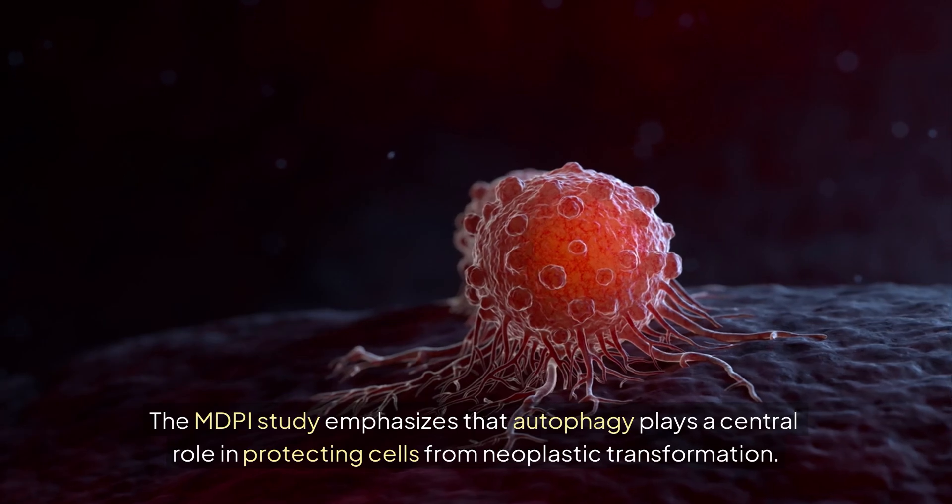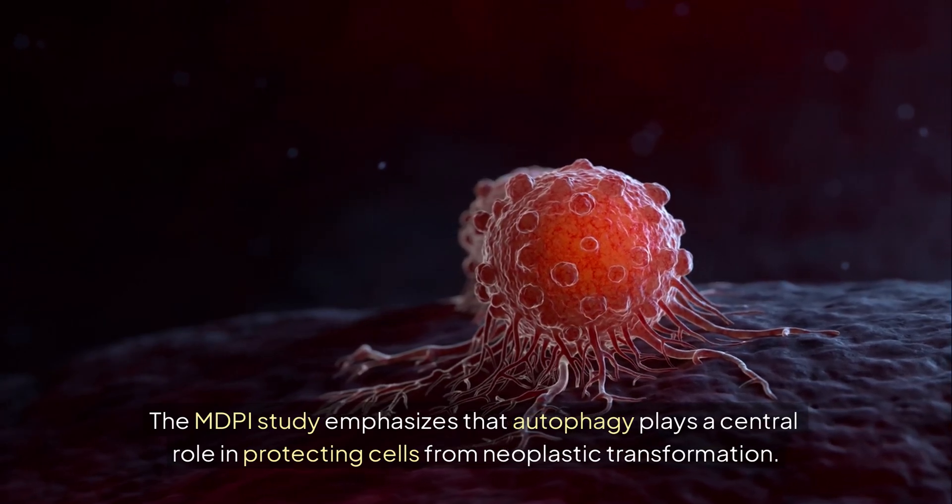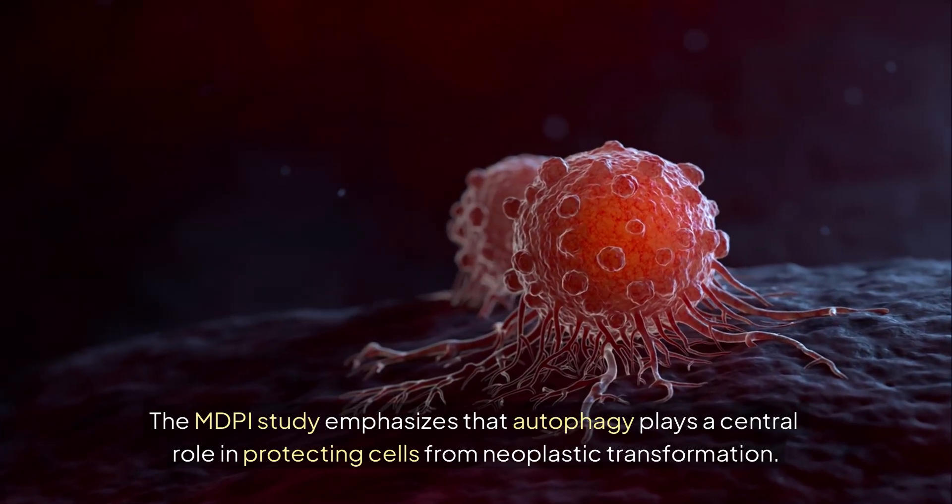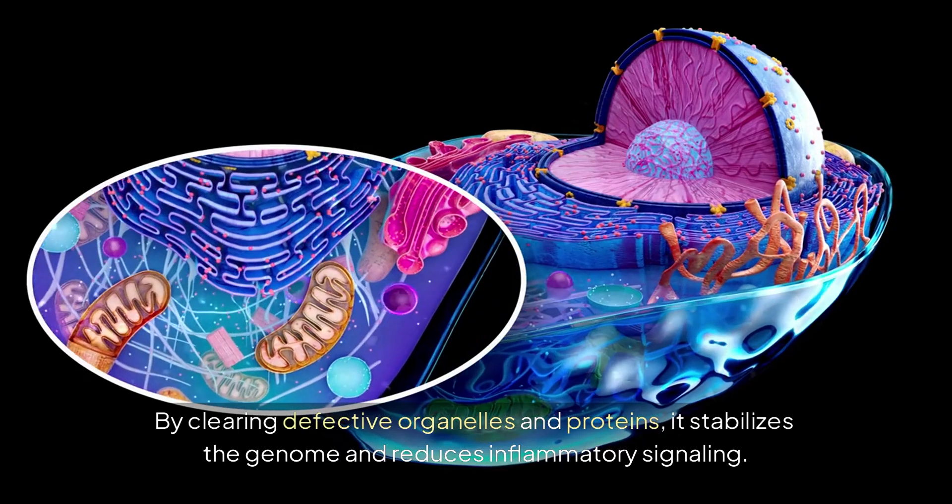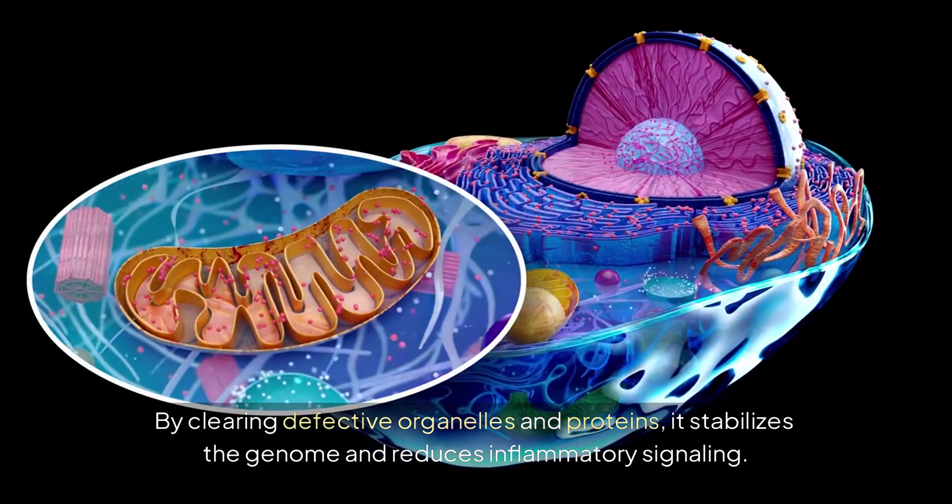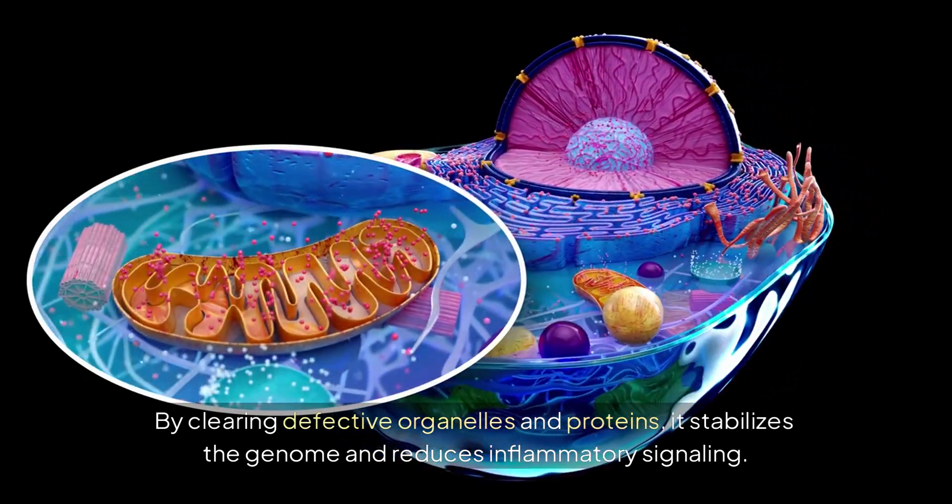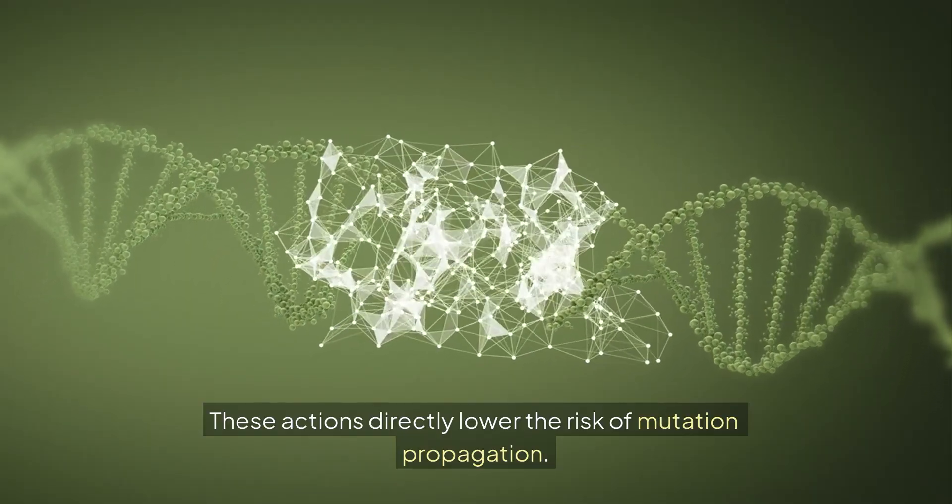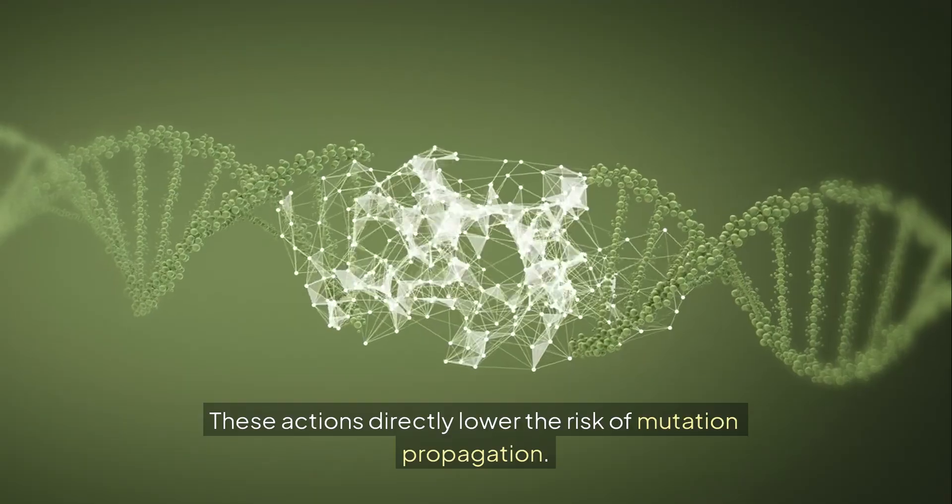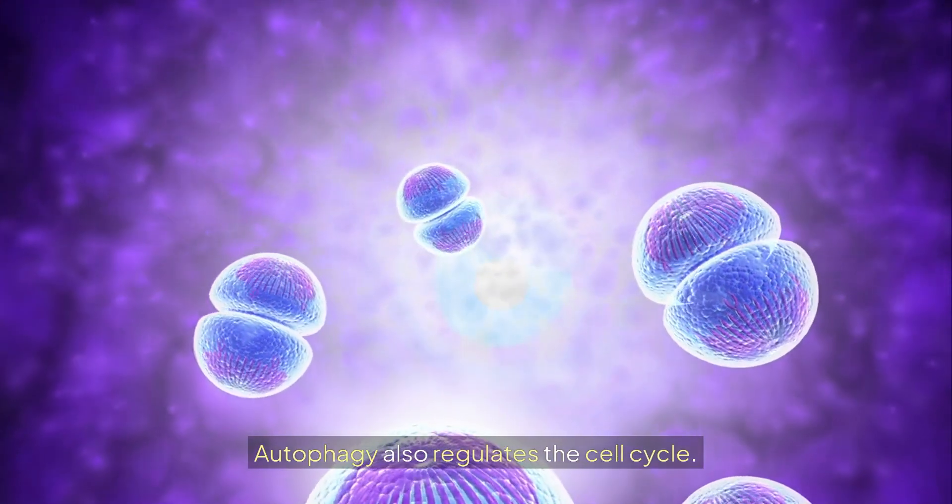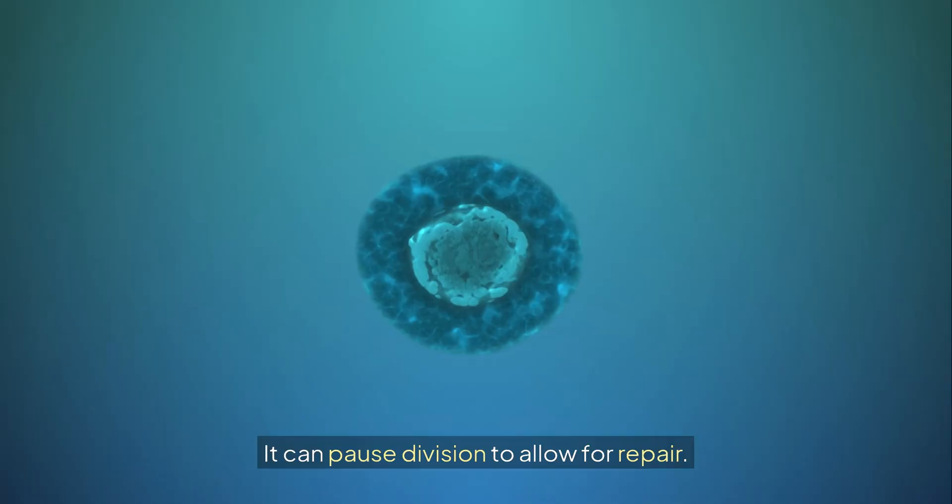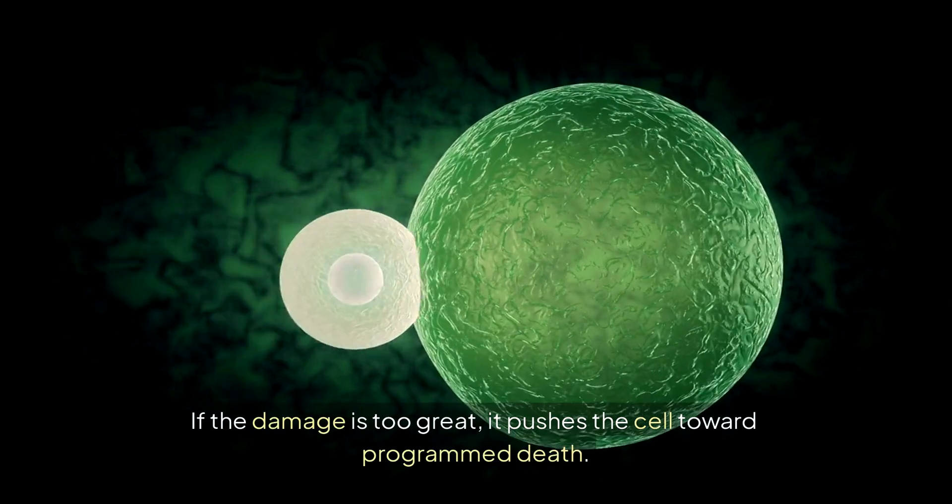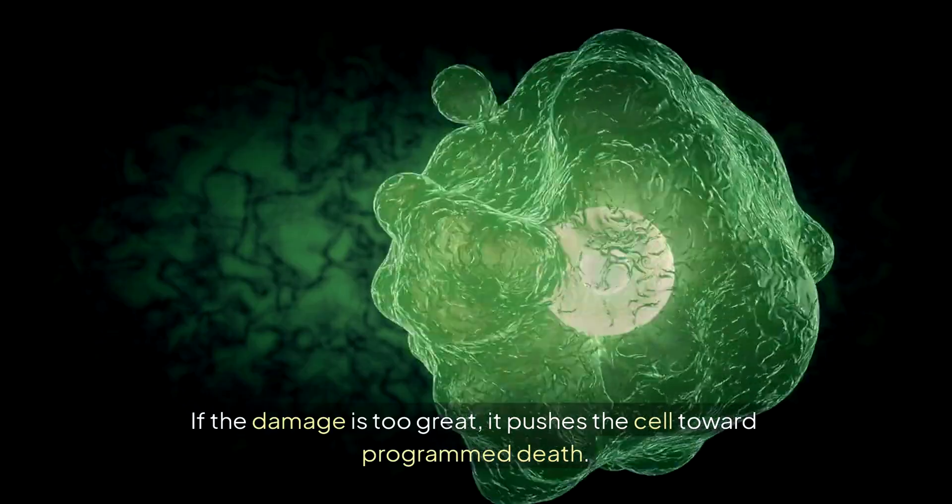The MDPI study emphasizes that autophagy plays a central role in protecting cells from neoplastic transformation. By clearing defective organelles and proteins, it stabilizes the genome and reduces inflammatory signaling. These actions directly lower the risk of mutation propagation. Autophagy also regulates the cell cycle. It can pause division to allow for repair. If the damage is too great, it pushes the cell toward programmed death.